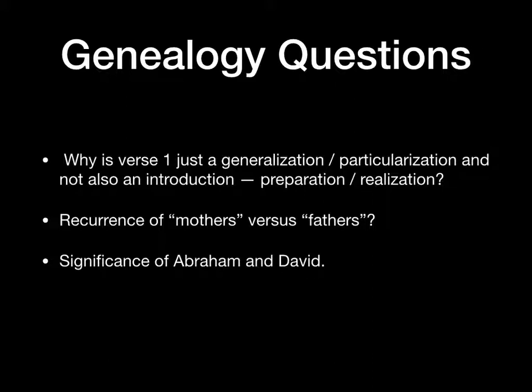Some of you wanted to know about the significance of Abraham and David — and we should throw in Christ, because Christ isn't Jesus's last name. Christ is Messiah. The genealogy is profound for Christology, because up front Matthew wants the reader to know that Jesus is the Messiah, the son of David, and the son of Abraham. Christ is Jesus's identity as the person through whom God is going to proclaim and inaugurate the kingdom. In Jesus, the kingdom of heaven comes near to us. God comes near to us.